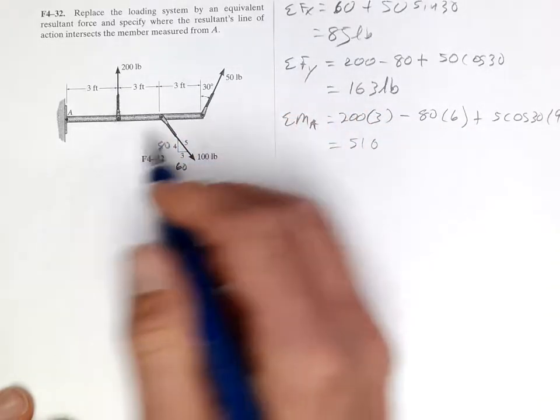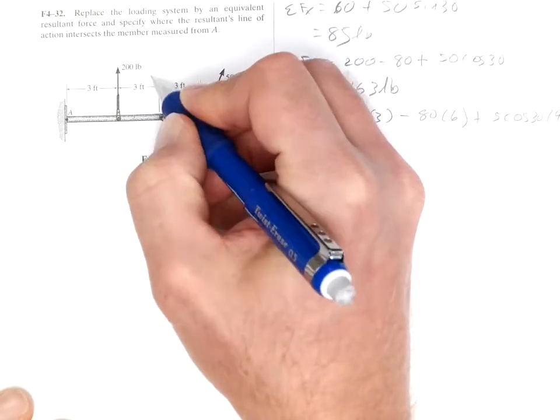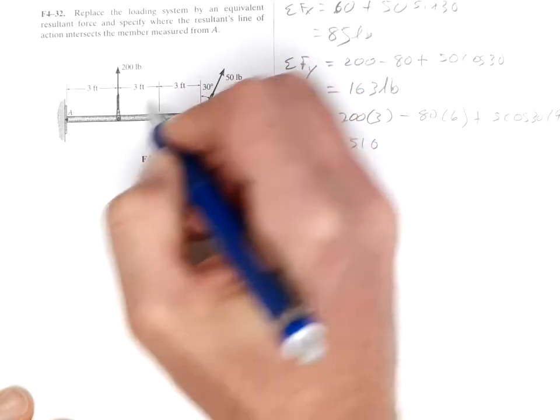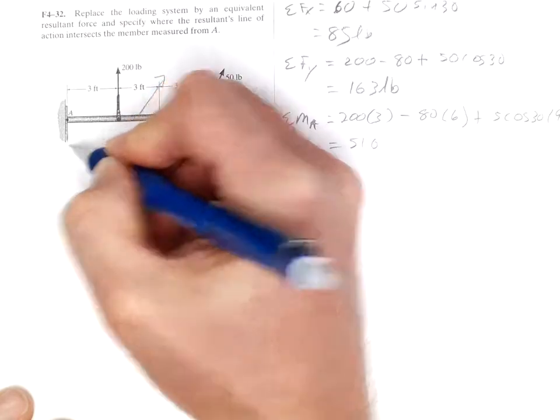So if we add these all together, we got 85 in the x, 163 in the y going up. And that's going to be placed somewhere in here, a distance x from A.